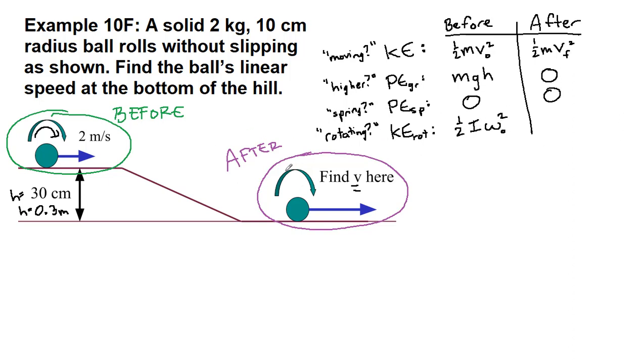We ask ourselves, are we rotating at the end of the problem? We definitely are. We never stop rolling, and so the answer here is yes, so we have 1/2 I omega_final squared. Then after all of those before and after questions, we also need to ask ourselves, is there a work term? What we are looking for here is a separate push or pull or friction or air resistance force that we are told about or asking for, and none of that shows up. So the answer here is no.